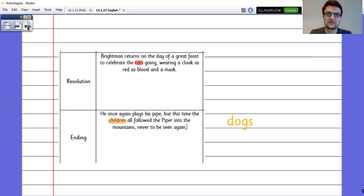There's a few other bits I want to share with you. So this is our toolkit for writing a legend and these are the things that you need to look to be able to tick off. So have you introduced a setting from the past? Have you included fronted verbials of time? Have you included relative clauses to give more information? Think back to your parentheses lessons in SPAG as well. How could you use that to help you?